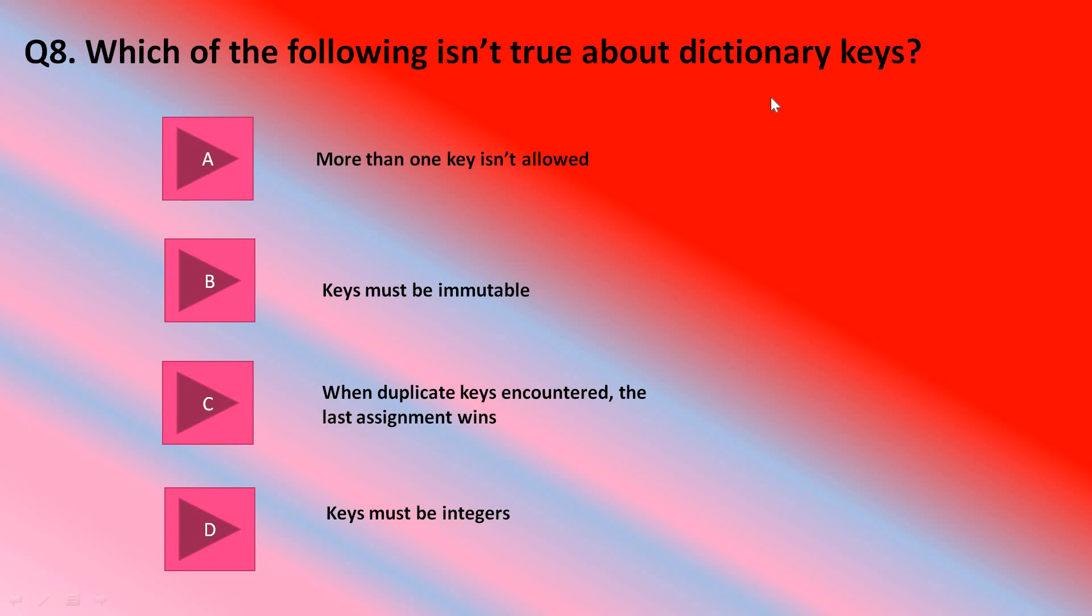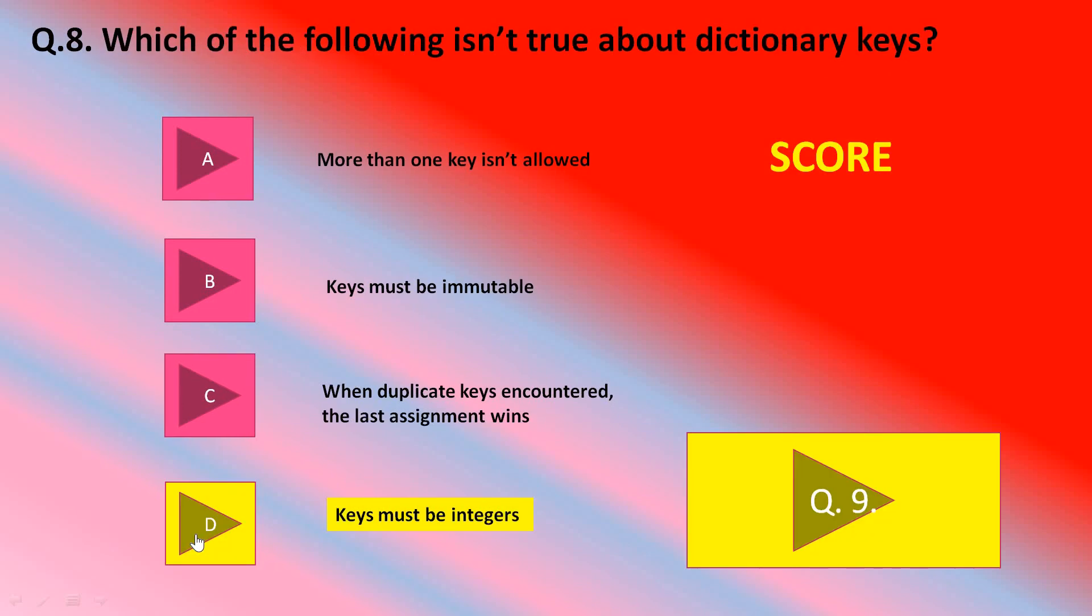Let's move to question number 8. Which of the following isn't true about dictionary keys? Which is the wrong option? More than one key is not allowed. Keys must be immutable. When duplicate keys are encountered, the last assignment wins. If duplicate keys are coming, you take the last one. Keys must be integers. Wrong. C part, when duplicate keys are encountered - again wrong. Keys must be integers. Okay.